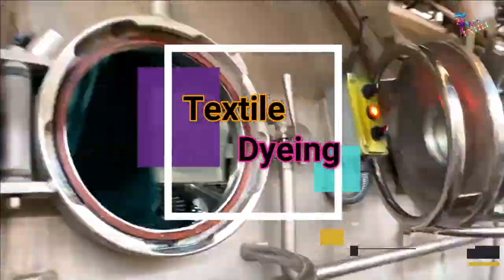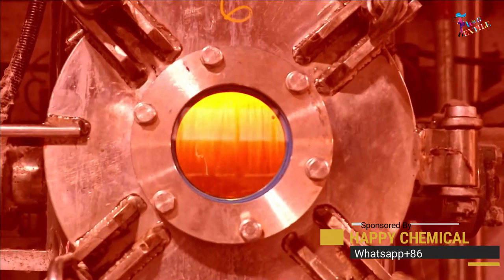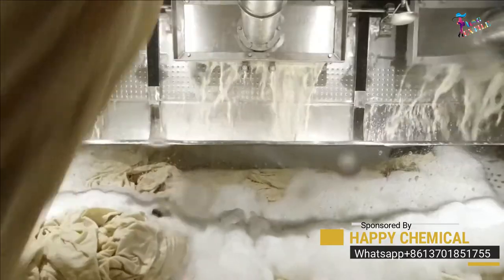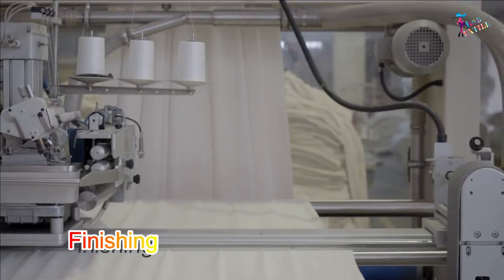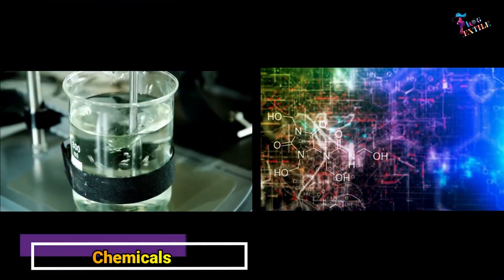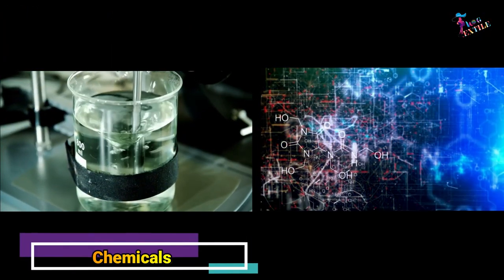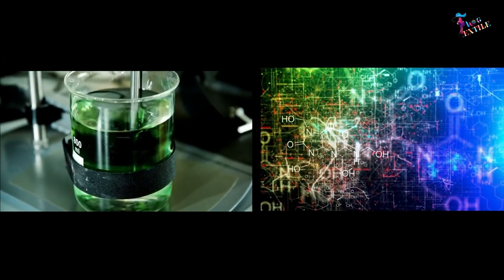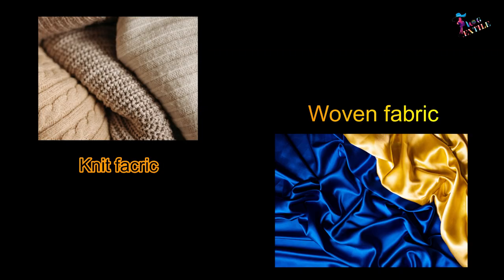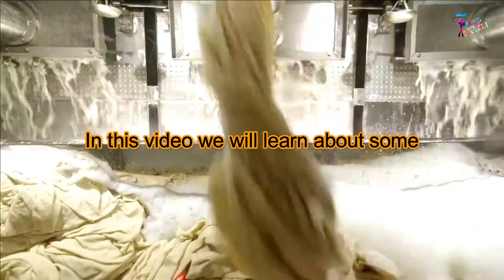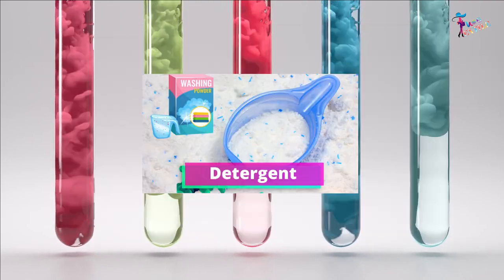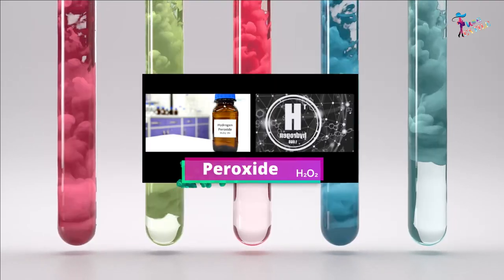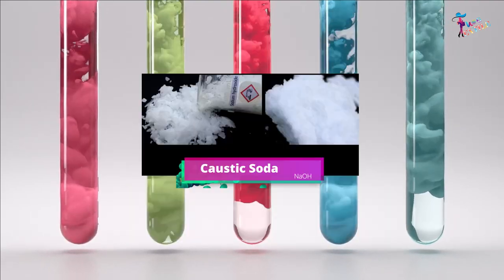Textile dyeing is a combination of a series of processes such as scouring, bleaching, dyeing, and finishing. Chemicals are the most important materials for textile dyeing in both knit and woven fabrics. In this video, we will learn about some of the most used chemicals and their uses in the dyeing and finishing process.